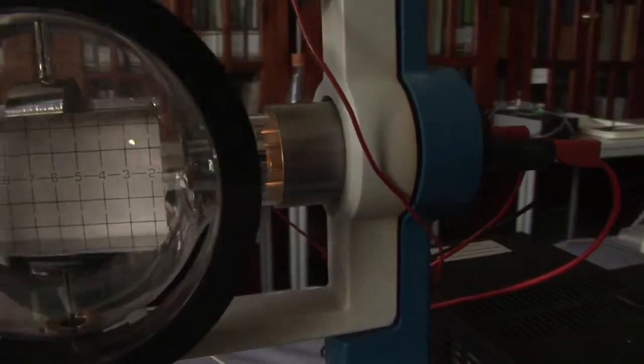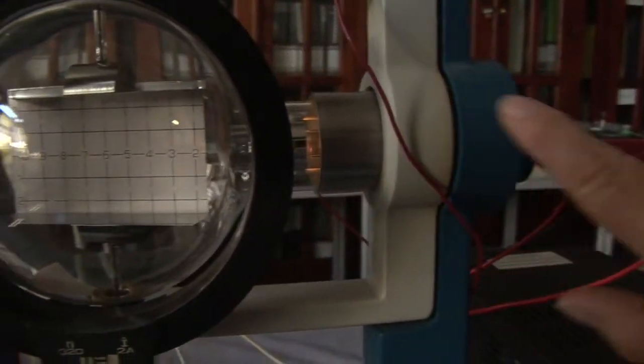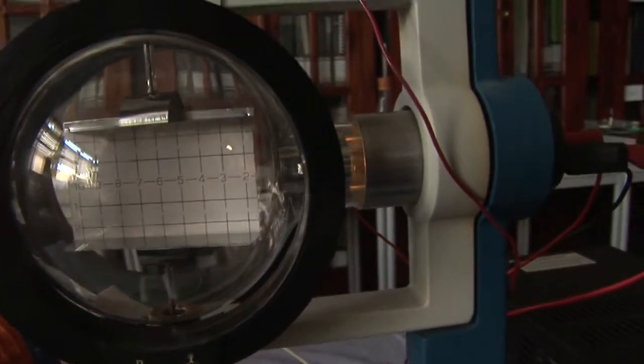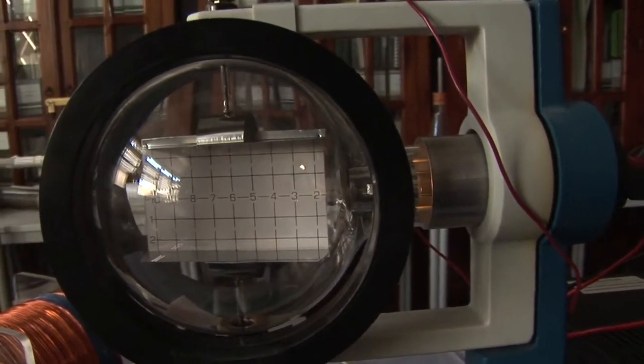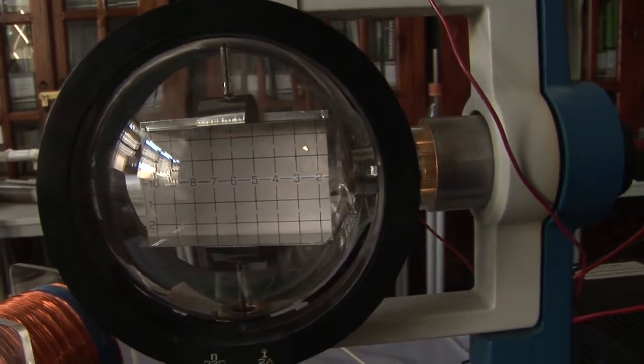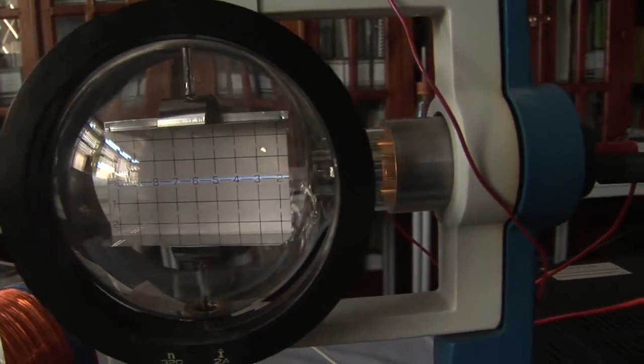Then we need to put some voltage between here and to accelerate the electrons across. So I'll bring it up to about 4,000 volts. And you should be able to see a blue line across the screen.